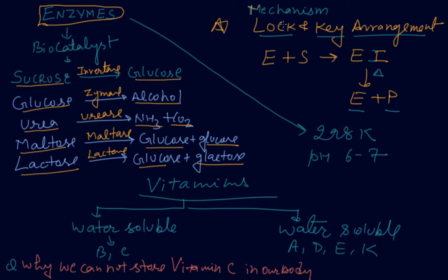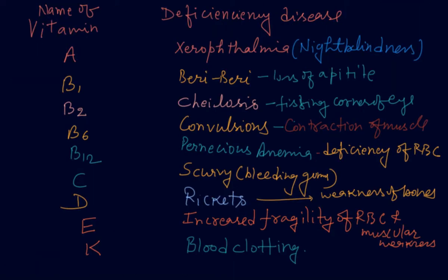Next is the diseases caused due to the lack of vitamins. Please learn them and remember them. They will come in the exams. Now the next point is deficiency diseases caused by different vitamins. Here I am mentioning the vitamins and the diseases caused by them. The deficiency of vitamin A causes xerophthalmia, which is commonly known as night blindness.